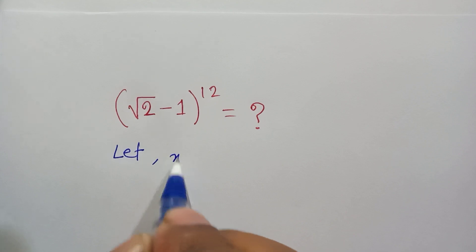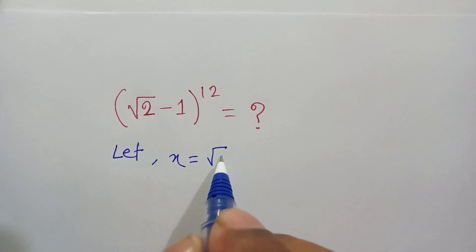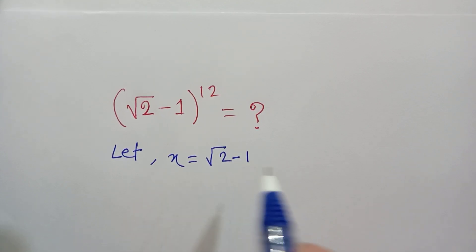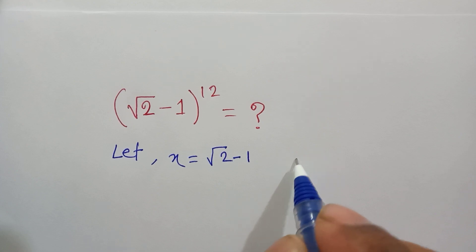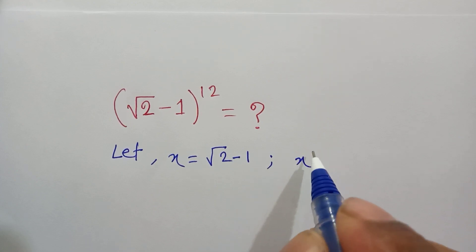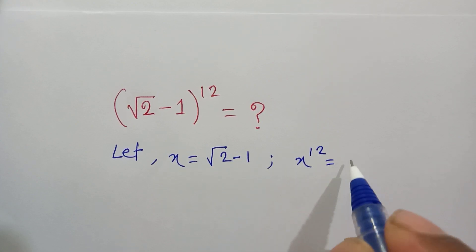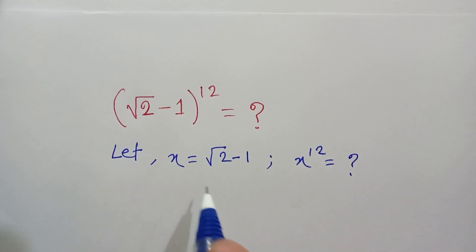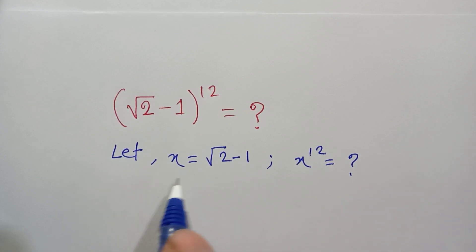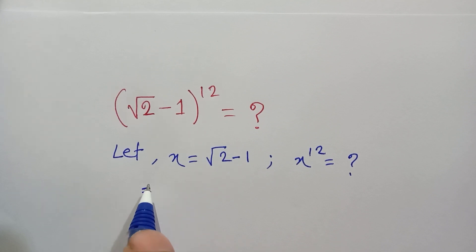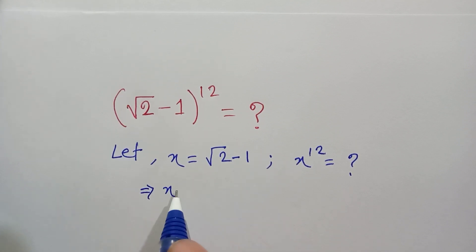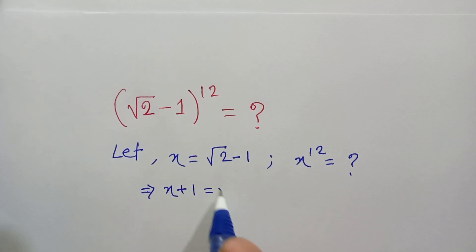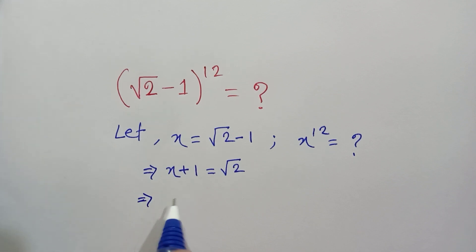Let x equal to √2 minus 1. So we need to find the value of x to the power 12. We rearrange this equation: moving the minus 1 to the left side makes it positive, so x + 1 = √2.